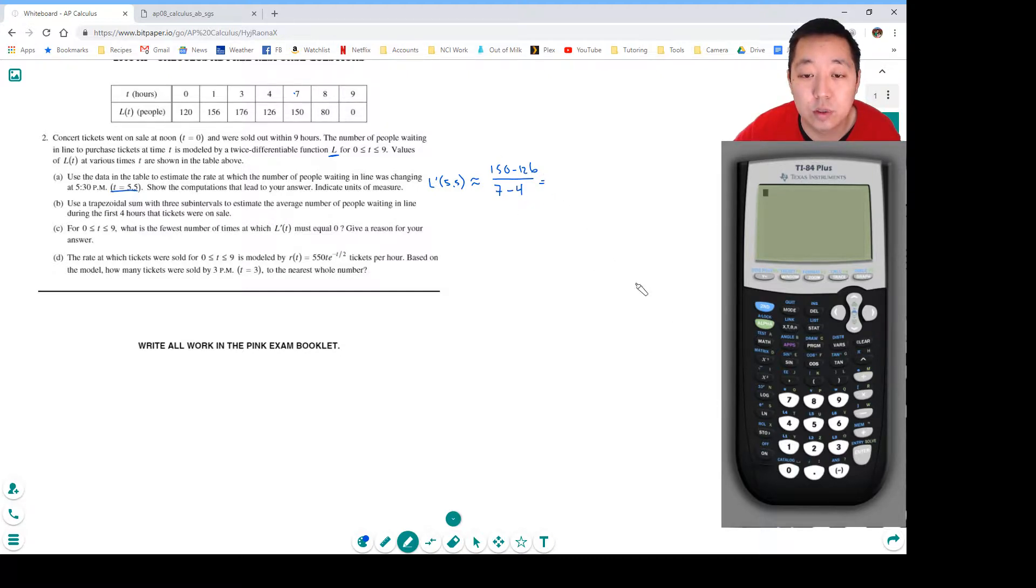We're going to do 150 minus 126 over 7 minus 4. So this is 24 divided by 3, and that's 8 people per hour.